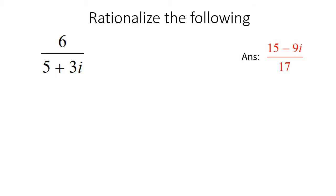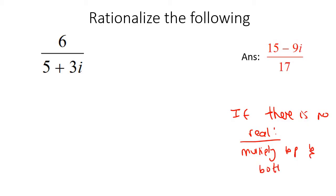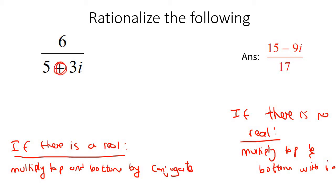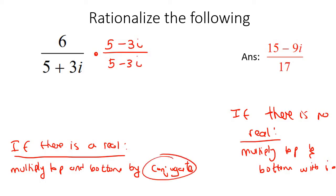Here's the next example. This one's a little different. Remember what I told you: if there is no real part, then all that you do is multiply top and bottom with i. But now there is a real part, so what do we do? If there is a real part, then what you do is multiply top and bottom by the conjugate. What's a conjugate? It's a really easy thing — you just switch the sign in the middle. So if it was a plus, it just becomes a minus. So we're going to multiply the top with 5 minus 3i and the bottom with 5 minus 3i. That's what a conjugate is.